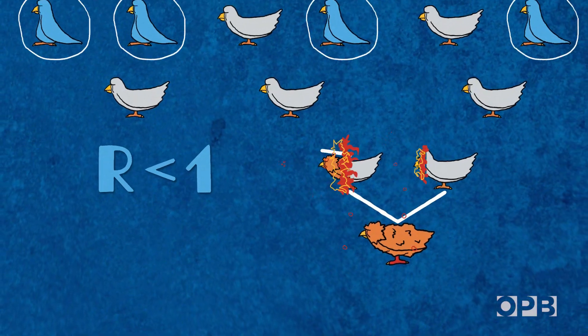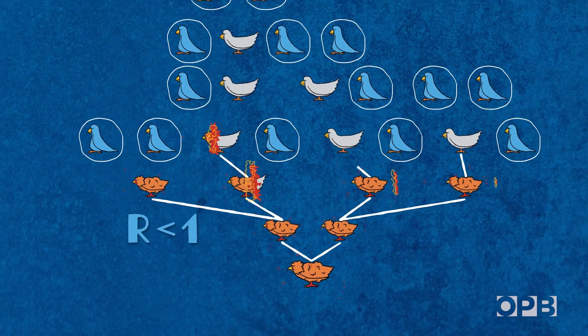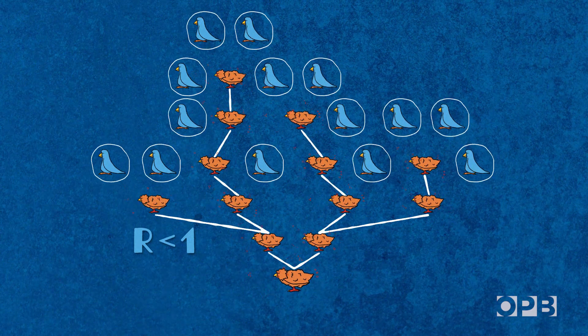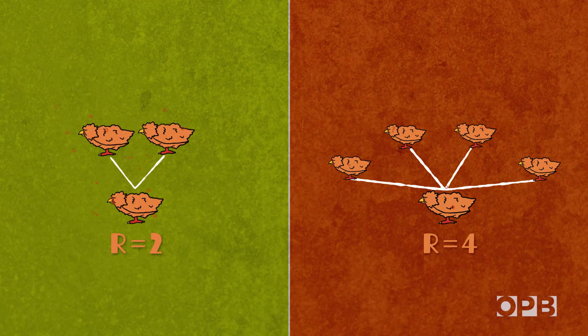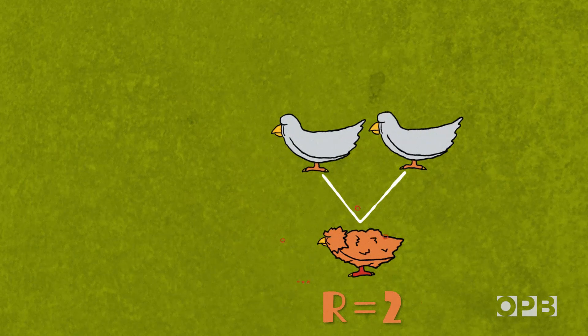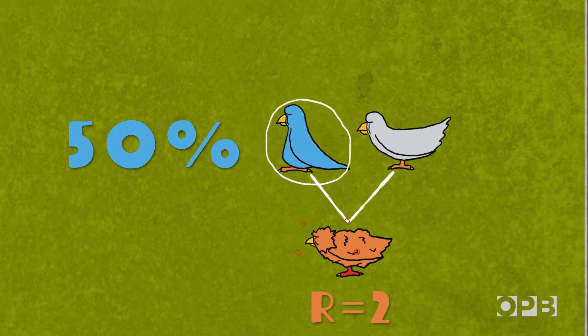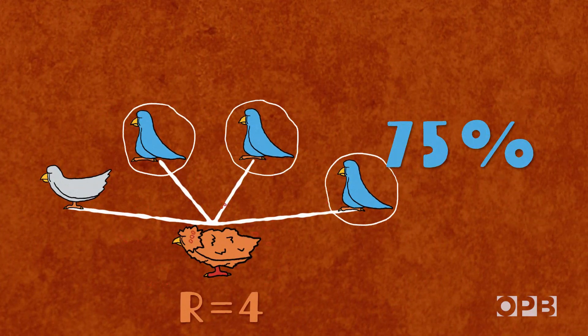But everything turns around when we get enough immunity to drop the R-value below 1. At that point, the virus can't spread as easily and it eventually fizzles out. The more infectious the disease, the more immune people we need to drop that R-value down below 1. With an R-value of 2, you only have to cross 50% immunity. At R equals 4, that herd immunity goal rises to 75%.